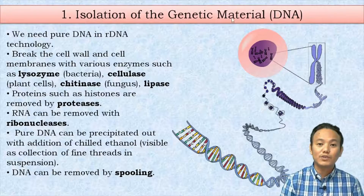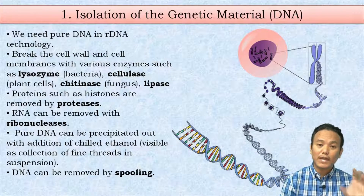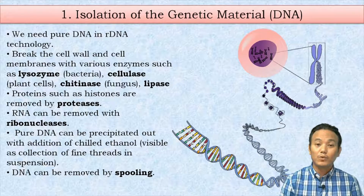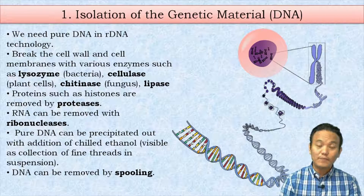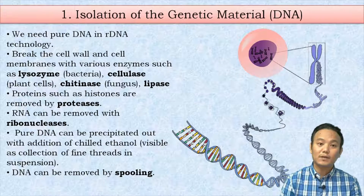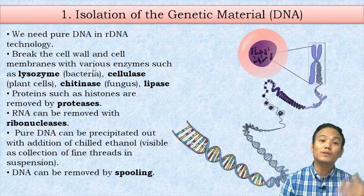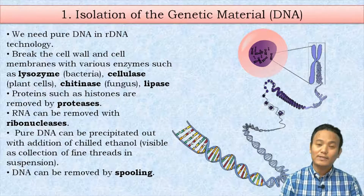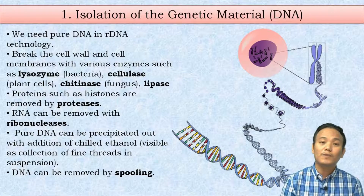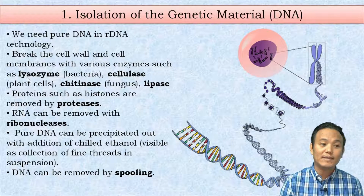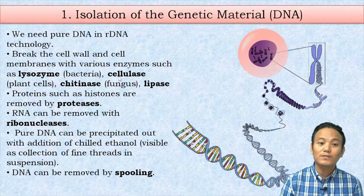The first process is isolation of the genetic material, that is DNA. For recombinant DNA technology we need pure DNA — DNA without any other biomolecules associated with it. Since DNA is located within the cell, and eukaryotic DNA is within the nucleus, we need to break open the cell membrane and the cell wall in cells like plant, bacterial, and fungal cells. This can be done using different enzymes.